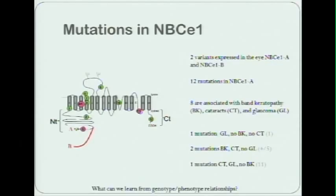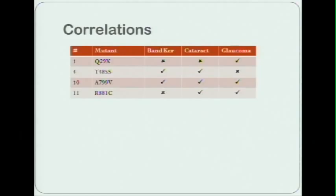The question I was interested in asking is what can we learn from these genotype-phenotype correlations about the role of NBCe1 in the eye, both in health and disease states?